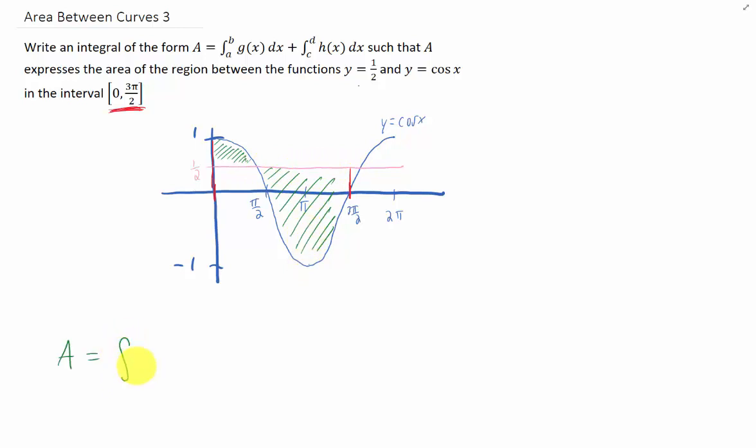We need to split up our integral into two pieces: one where cosine is the upper function and 1/2 is the lower function, and the other integral where 1/2 is the upper function and cosine is the lower function. The limits of integration on this first integral will be the x values for this first region. Likewise, the limits on the second integral will be the x values for this region. To determine those limits, we're going to have to take the two functions and set them equal to each other.